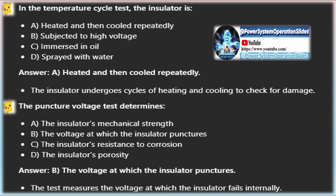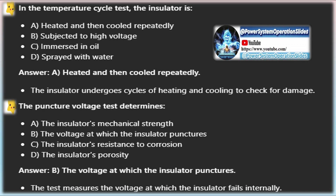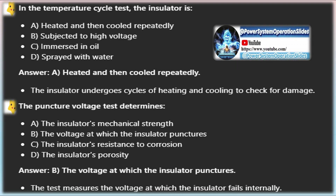In the copper sulfate test, the insulator with its metal fitting is suspended in a copper sulfate solution for one minute. The insulator is then removed, wiped, and cleaned. This process is repeated four times. The insulator is then examined for any metal deposits, which should be absent.